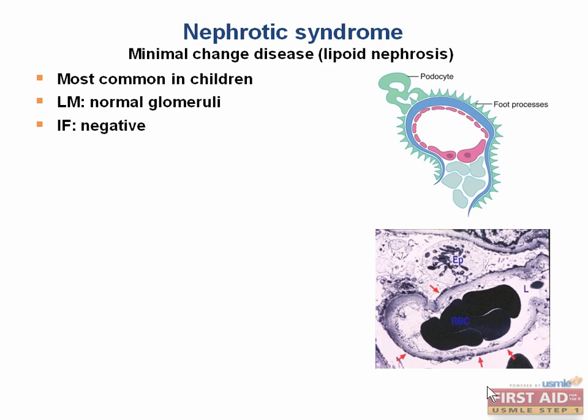The immunofluorescence is also negative. On electron microscopy, the foot processes of the podocyte become effaced, which leads to a disruption of the normal glomerular filtration barrier. The normal pattern of the foot processes is replaced by a blobby foot process without the normal filtration slits — these foot processes are basically just fused together, and there's no longer a filtration barrier.